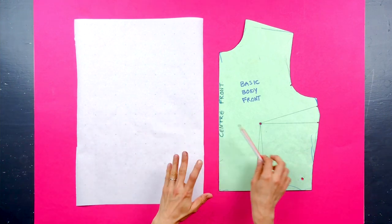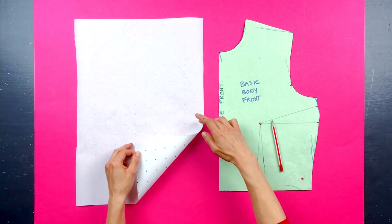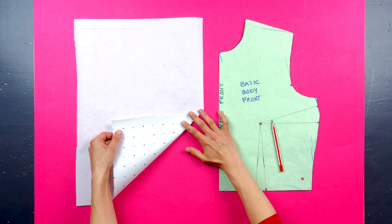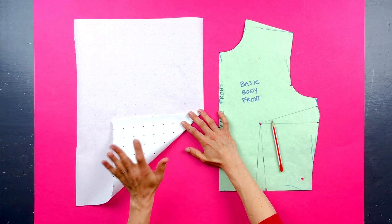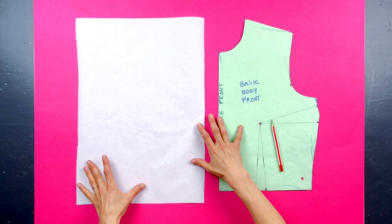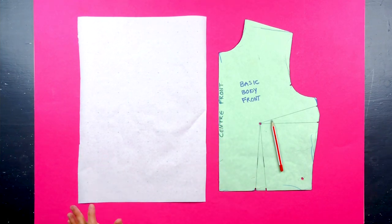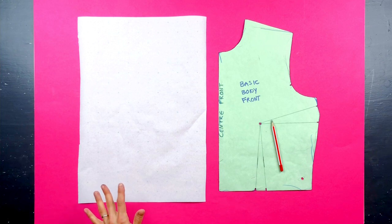You can see I use what is called cross and dot paper, and I bet you can guess why, because it's got the dots and the crosses. This is a specialist paper you can buy from pattern cutting and sewing shops. I now buy a roll.